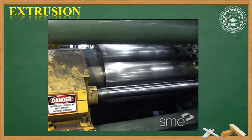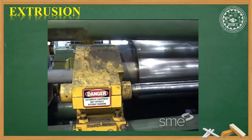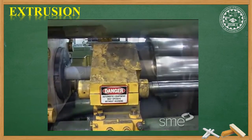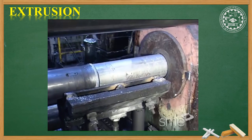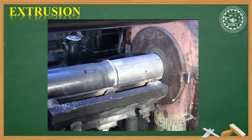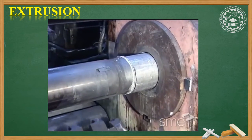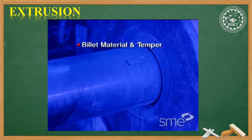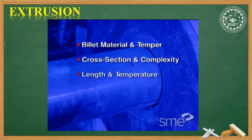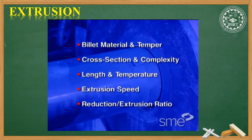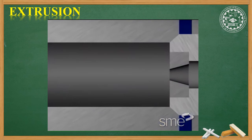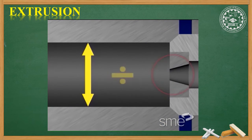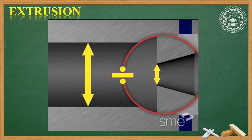Hot extrusion is most commonly performed on horizontal hydraulic presses, which are usually rated in force capacity. The pressure applied to the billet depends on billet material and temper, its cross-section and complexity, length and temperature, extrusion speed, and extrusion ratio. The extrusion ratio equals the cross-sectional area of the container liner divided by the cross-sectional area of the die openings.